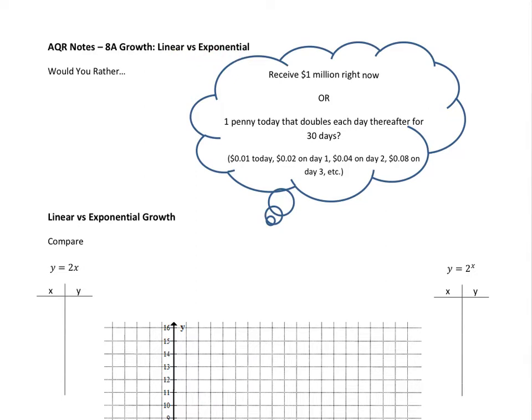And I start out with a very interesting question here. Would you rather receive one million dollars right now or one penny today that doubles each day thereafter for 30 days? And just to give you an idea, you get one penny today, two pennies tomorrow, four pennies the next day, eight pennies the next day, and so on. A lot of you out there have probably already heard this problem before and know which one you should choose.